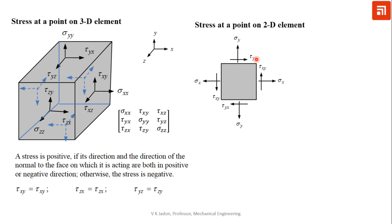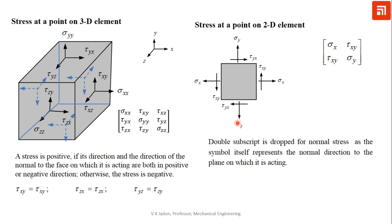For the 2D case, we can similarly represent and explain the stress directions at a point for a 2D element — also called the biaxial state of stress. In this case subscripts are sometimes dropped for normal stress, since the direction is known to be perpendicular to the plane. We can also use notation sigma_xx and sigma_yy and so on.